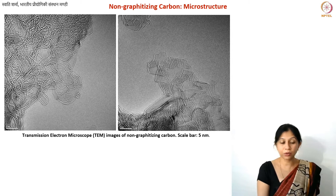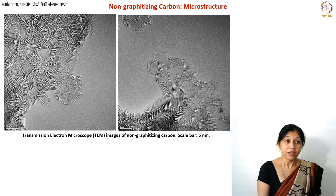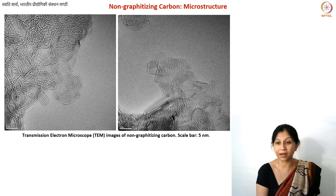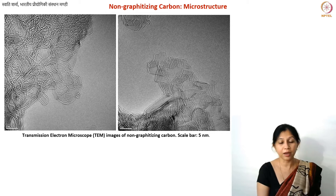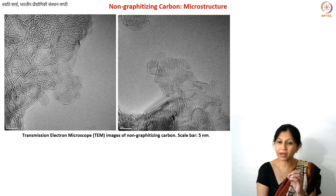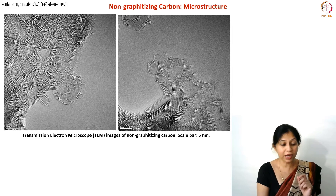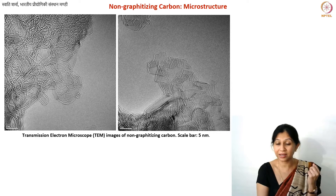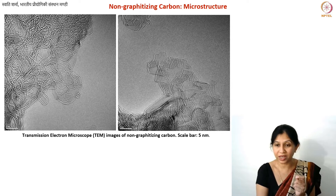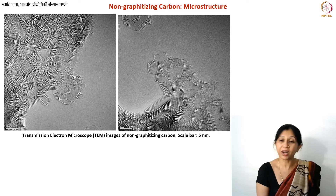In this lecture we are going to talk about a few more things related to non-graphitizing carbons, specifically their microstructure. You know that graphitizing as well as non-graphitizing carbons can be obtained via heat treatment of different types of polymers. Both coking and charring mechanisms can give you both types. An example of a non-graphitizing carbon formed via coking is glass-like carbon, and one formed via charring is activated carbon.